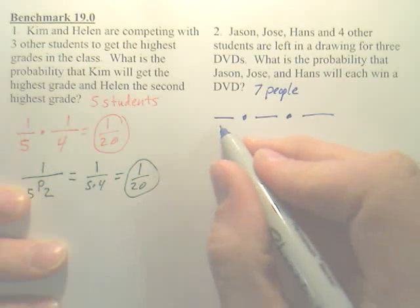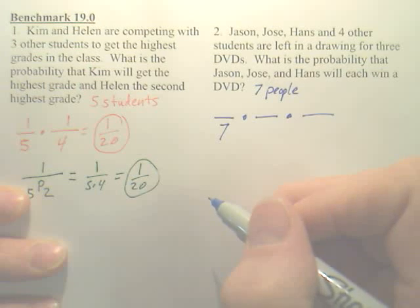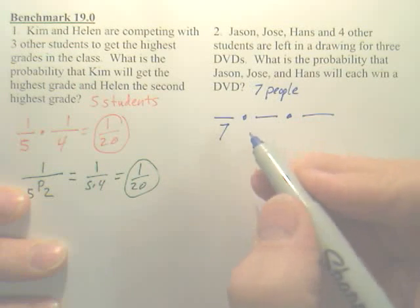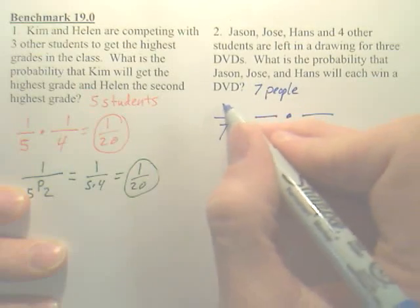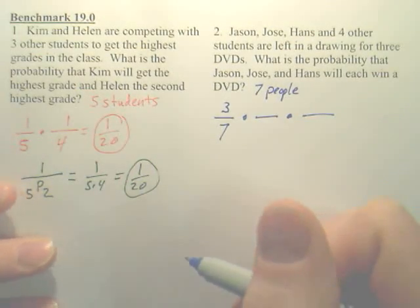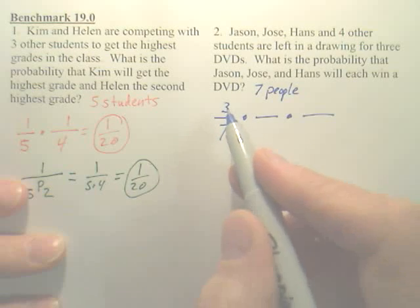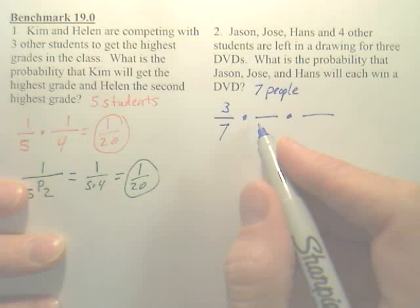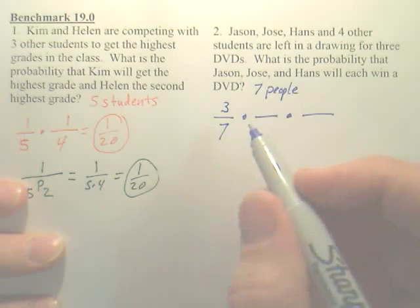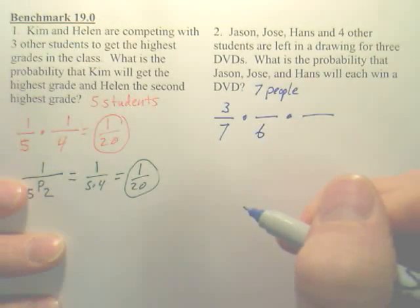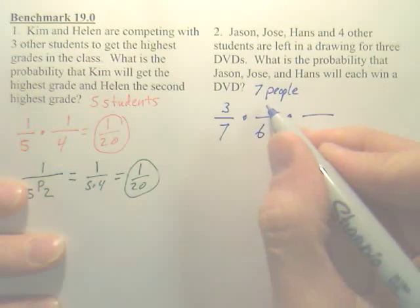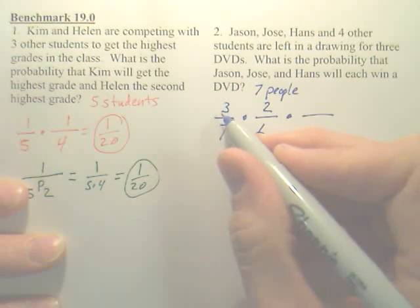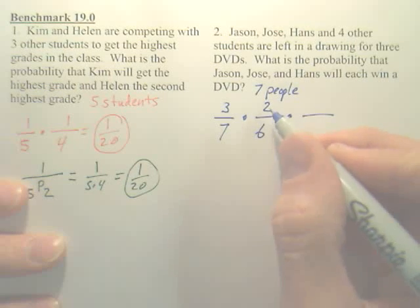For the first event, what's the probability of one of these three guys getting a DVD? There are seven to choose from, and I want one of these three, so that's three out of seven. For the second event, I now have six people left to choose from, and two of the three named guys remain, so that's two out of six.